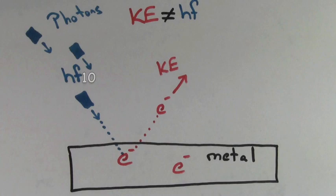If the photon gave the electron 10 units of energy, that electron might only come out of the metal with 8 units of kinetic energy. Where did the missing 2 units of energy go?